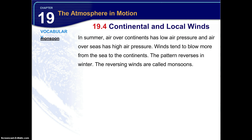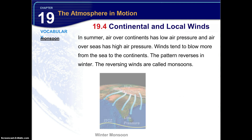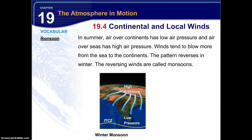Now in the summer, air over continents has low air pressure and air over the seas has high air pressure, due to temperature and humidity. Winds tend to blow more from the sea to the continents. The pattern reverses in the winter. These reversing winds are called monsoons.